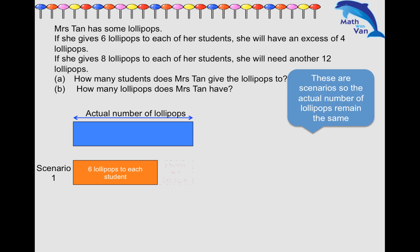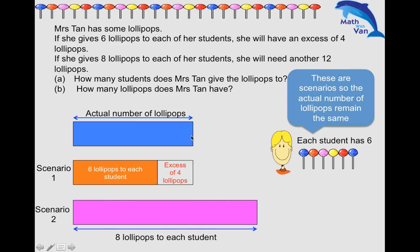And scenario two: she gives eight lollipops to each of the students but needs another twelve. So she needs more than what she has, so the model should be longer than this blue block by twelve. This is how much she will need - the number of lollipops she will need in order to give eight lollipops to each student.